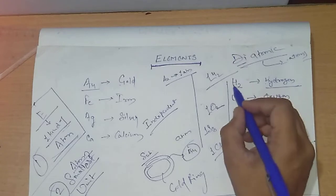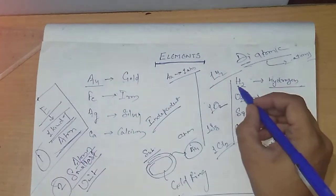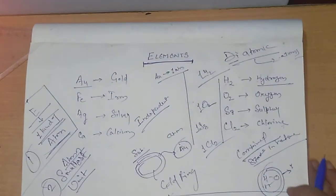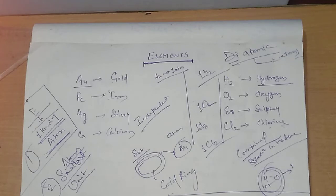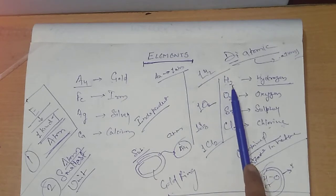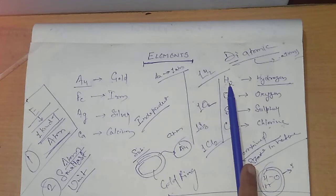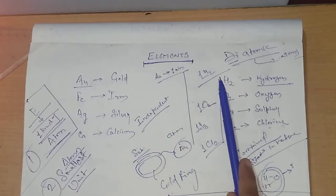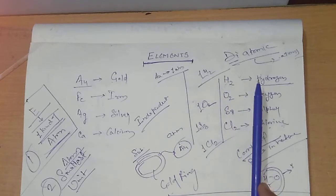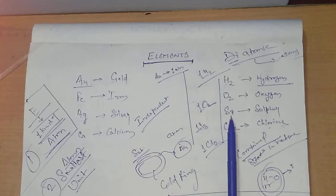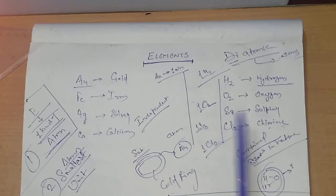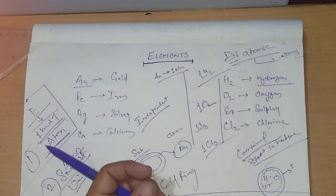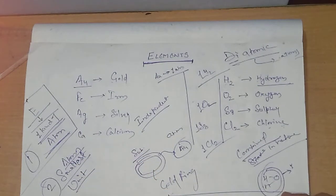Hydrogen cannot exist in a free or individual state, so one molecule of hydrogen consists of two atoms. But since the atoms are of only one kind, hydrogen (H2) is still considered an element. Similarly, sulfur — one molecule of sulfur has eight atoms — is also considered an element because it again has only one kind of atom in it.